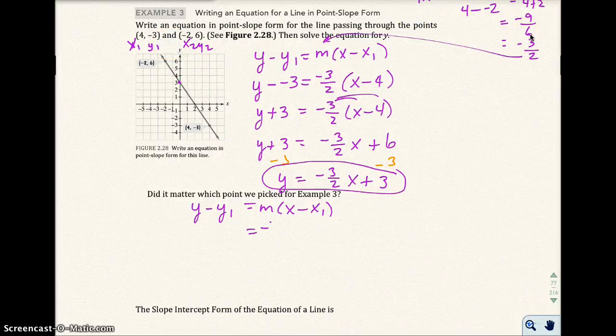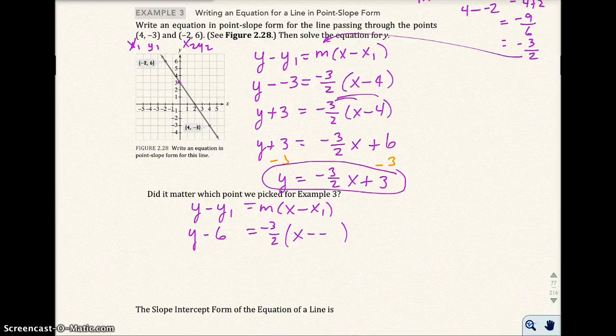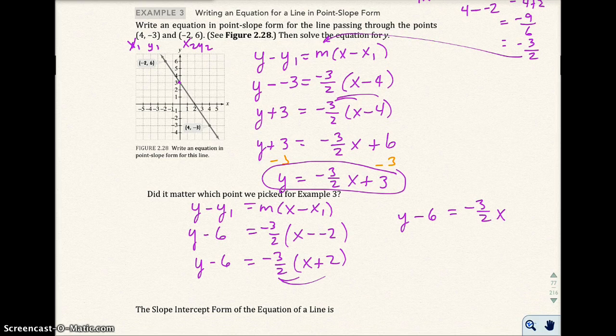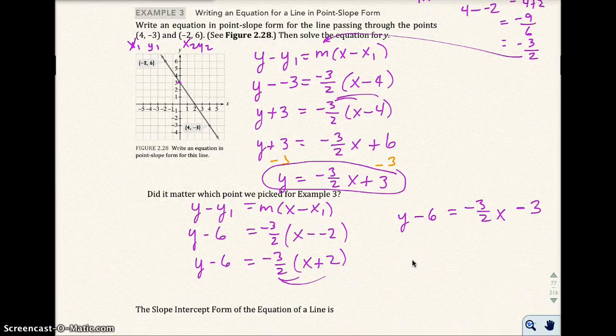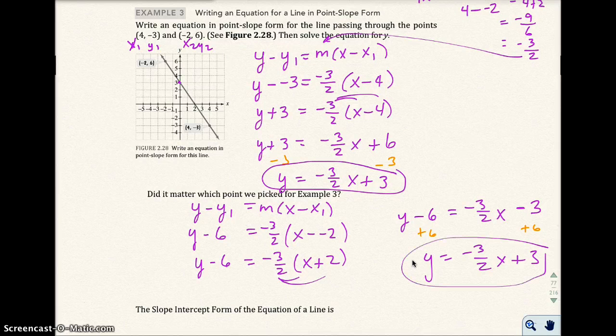And the slope is going to be the same no matter what because I can switch these points around, I still have the same slope. So I go ahead and plug in the -3 halves here. My question is, it doesn't matter which point I pick. And I'm going to go ahead and pick the other point. So I have y minus 6 and then x minus a negative 2. That gives me y minus 6 equals -3 halves x plus 2. And then when I solve for y, I get y equals -3 halves x plus 3.